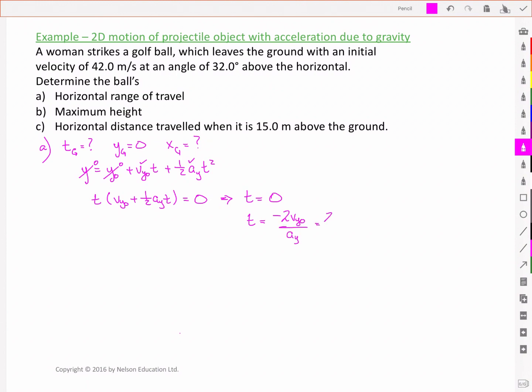Substituting in. And so I get a second solution for time of 4.54 seconds. We'll do a quick check on our units. We've got meters per second divided by meters per second squared. Which is going to leave me with seconds. So the first time is when it starts. And y is equal to 0 at that point. But it's also equal to 0 when it hits the ground 4.54 seconds later.